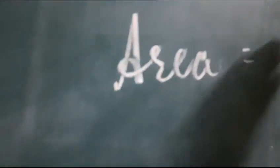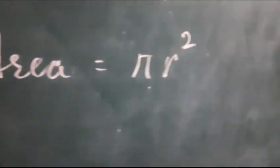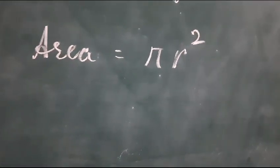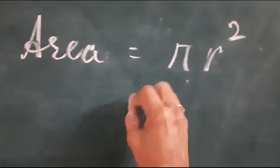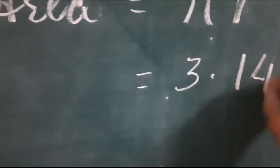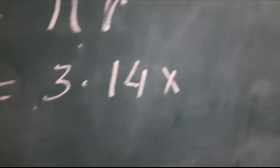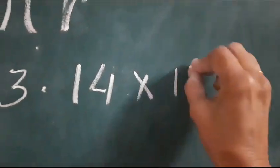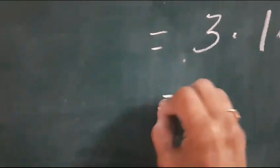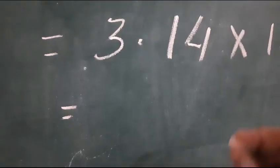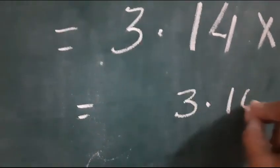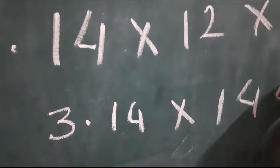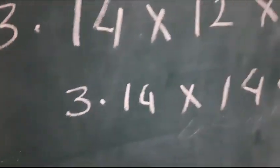We will find out the area by putting the value in the formula which is pi r square. Then pi's value is given 3.14 and radius is given 12, so then it will come 3.14 into 144. You just calculate it somewhere in the rough column.